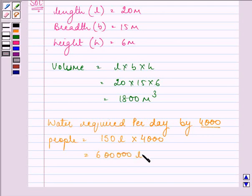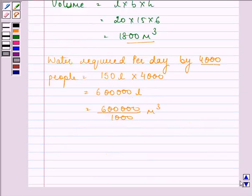It will be converted into meters since we have the volume in meter cube. So that will be 6 lakh divided by 1000 to get converted into meter cube, that is 600 meter cube.